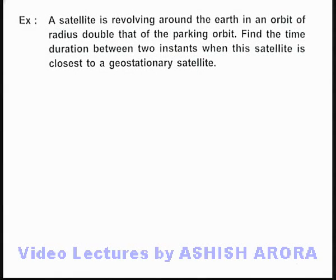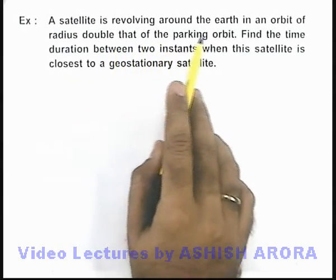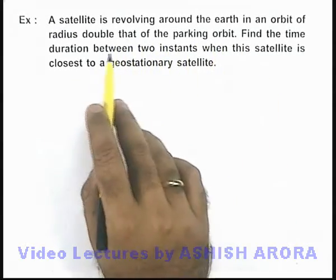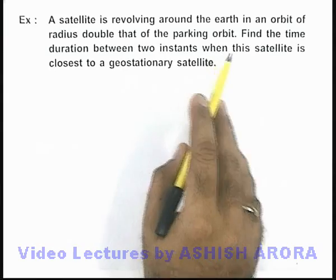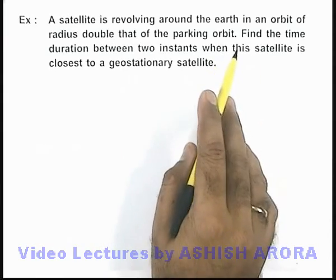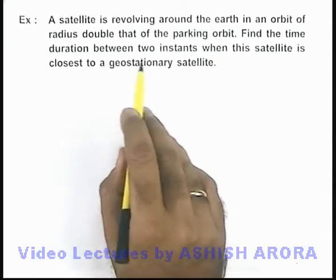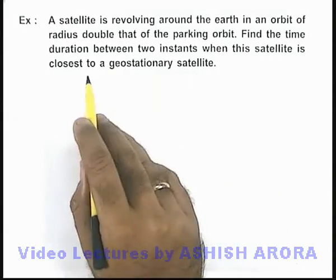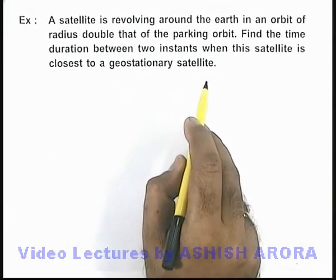In this example, we are given that a satellite is revolving around the earth in an orbit of radius double that of the parking orbit. We are required to find the time duration between 2 instants when this satellite is closest to a geostationary satellite.